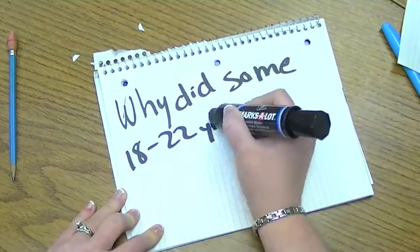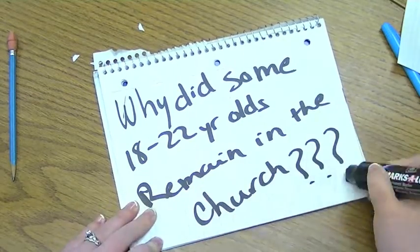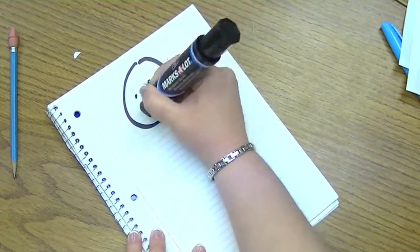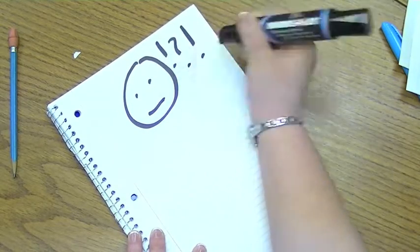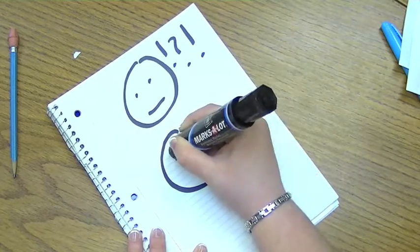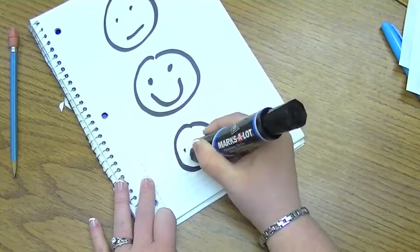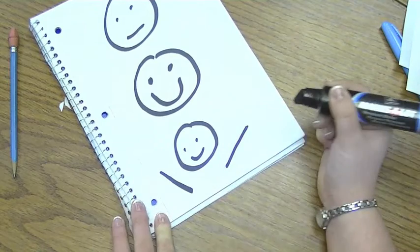But not everyone leaves. So why did some 18-22 year olds remain in the church? 58% said that the church is relevant in helping them make decisions in life. 50% said that the church is helping them become a better person. And 42% said they are committed to the purpose and work of the church.